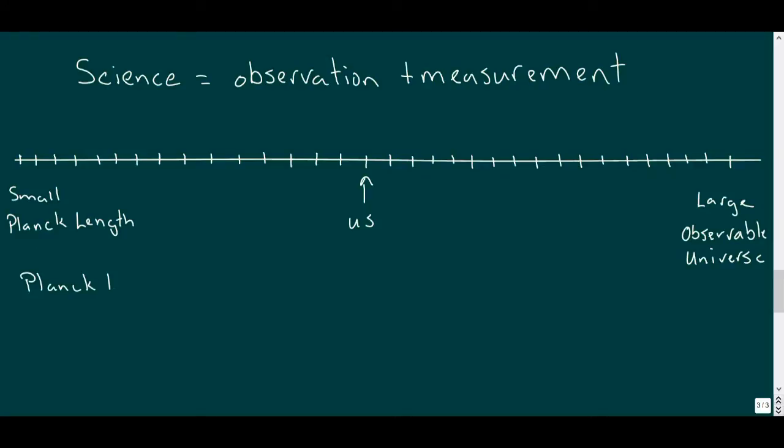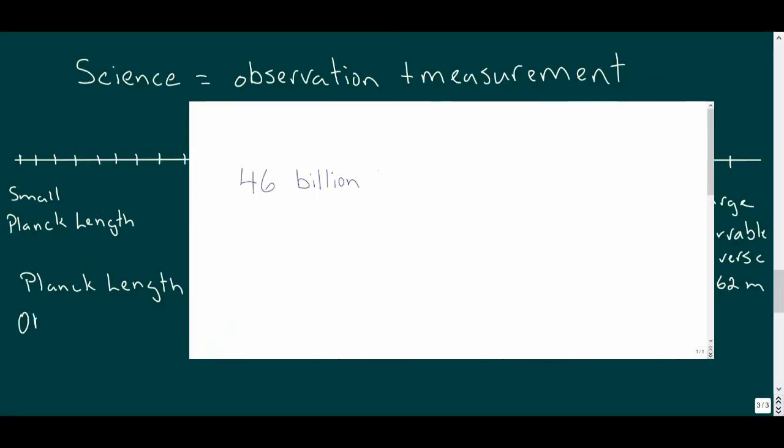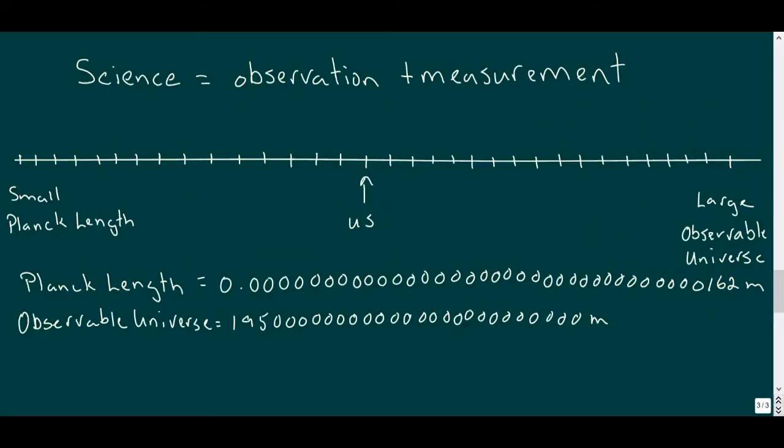To see how small the Planck length is in meters, it takes a decimal point followed by 34 zeros and 162. And remember, all of those zeros are insignificant placeholders. But I'm not sure where my mind was at recording the original video, so you'll have to ignore that number. The farthest we can see in any direction is 46 billion light-years, which in meters would be 435 followed by 24 zeros.